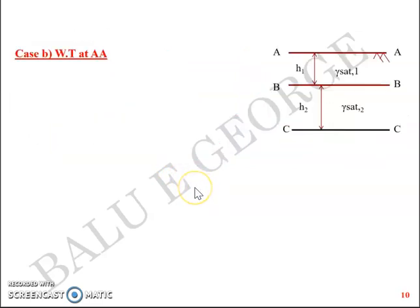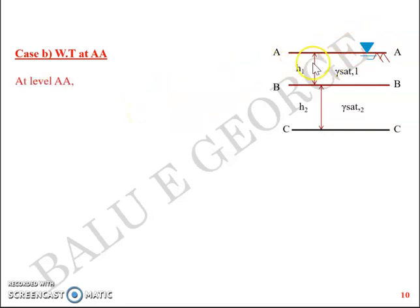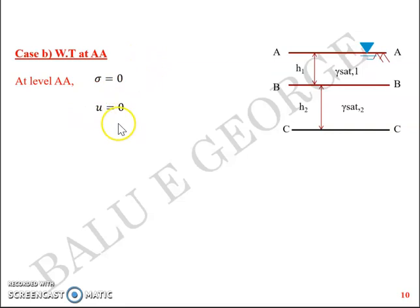Now as Case B, we'll consider when the water table is at level A — earlier it was above level A at height h. At level AA, you have no weight above it so total stress is 0. The water table height above this level is also 0, so neutral stress is 0 as well. Therefore effective stress sigma dash equals 0.